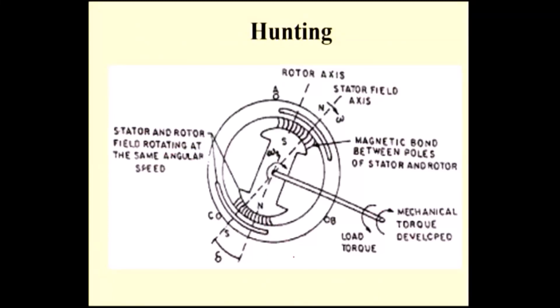Hunting. This is one more important point. Once the synchronous motor rotor is locked with the opposite pole of the rotating magnetic field, it will rotate continuously in the same direction of the rotating magnetic field with the same speed. For example, in a 4-pole 50 Hz system, the rotating magnetic field speed is 1500 RPM, so the motor will run at 1500 RPM.